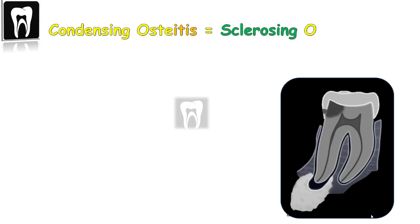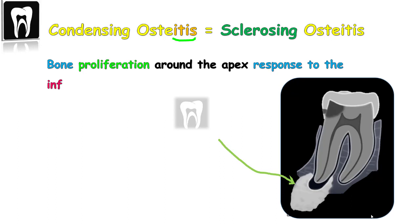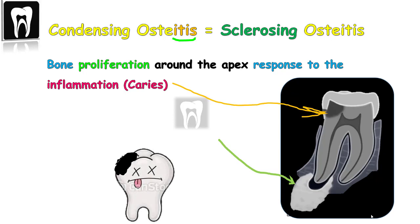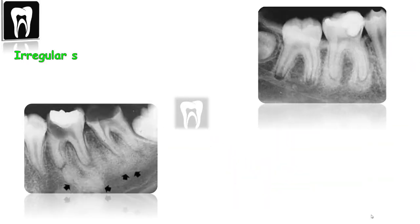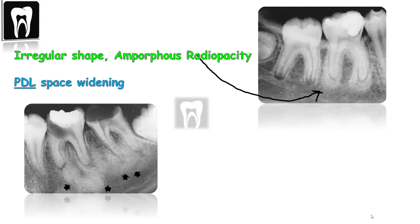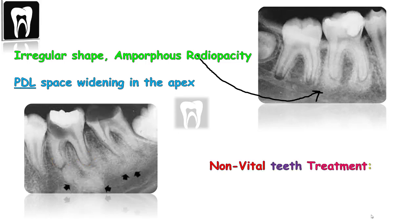Condensing osteitis — as the name suggests, condensing osteitis or sclerosing osteitis means inflammation. It's a dense bone proliferation in response to inflammation. Therefore, it will only be found at the apex of non-vital teeth. Condensing osteitis appears as an irregular shaped radiopacity with a widened periapical space or periapical radiolucency between the root and the area of sclerosis. It needs root canal treatment of the non-vital teeth.